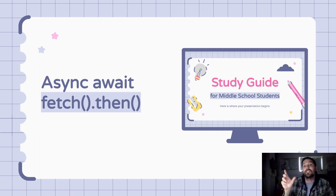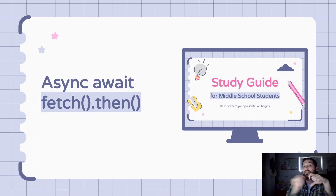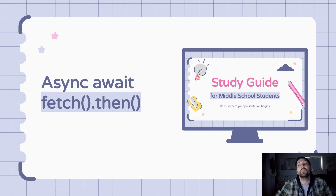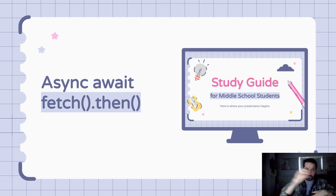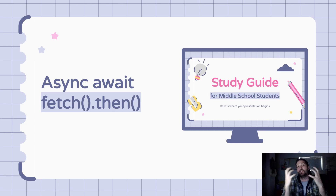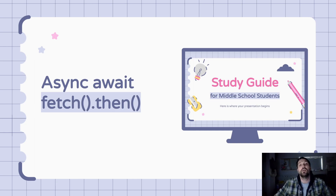Async/await allows us to say: go do the thing in the code, and then don't do the next thing until we get a response. We're not going to do the next thing until we get a response. We'll show you in the code how that looks, but it's going to be important. When I first saw it, I didn't quite understand what was happening — it does the thing, keeps going, then comes back. But if you want things to happen after the response comes back, you have to put them inside the asynchronous wait-then structure.